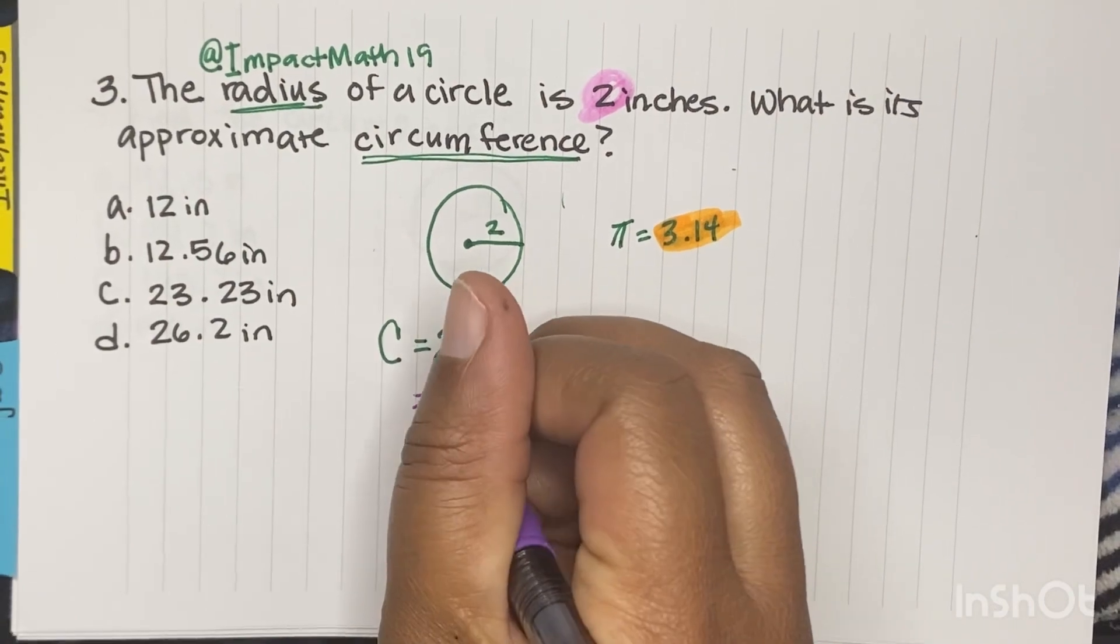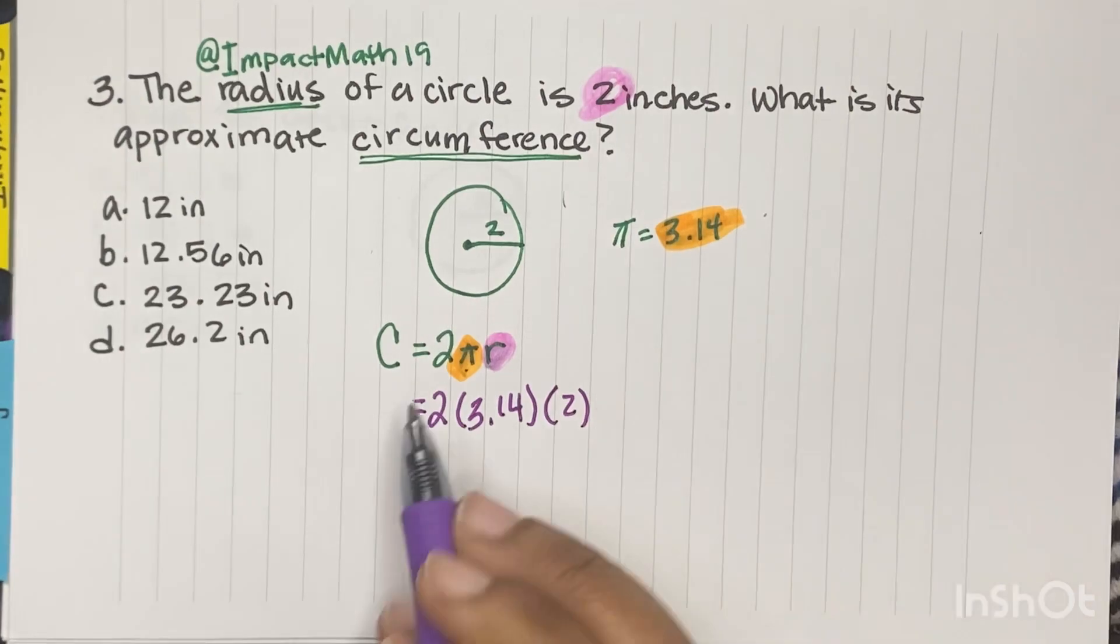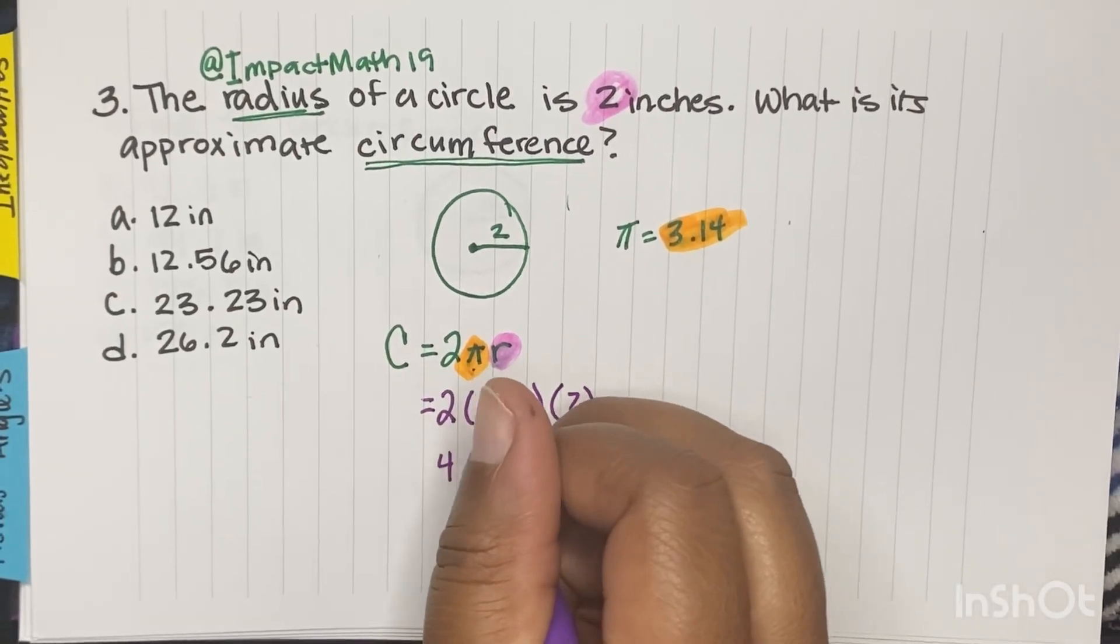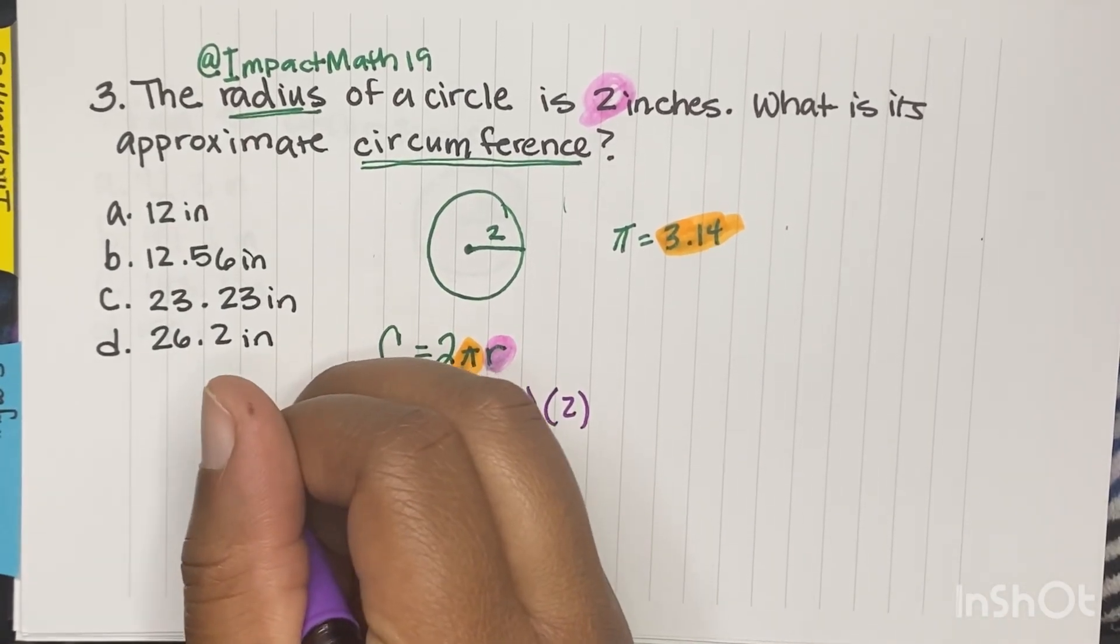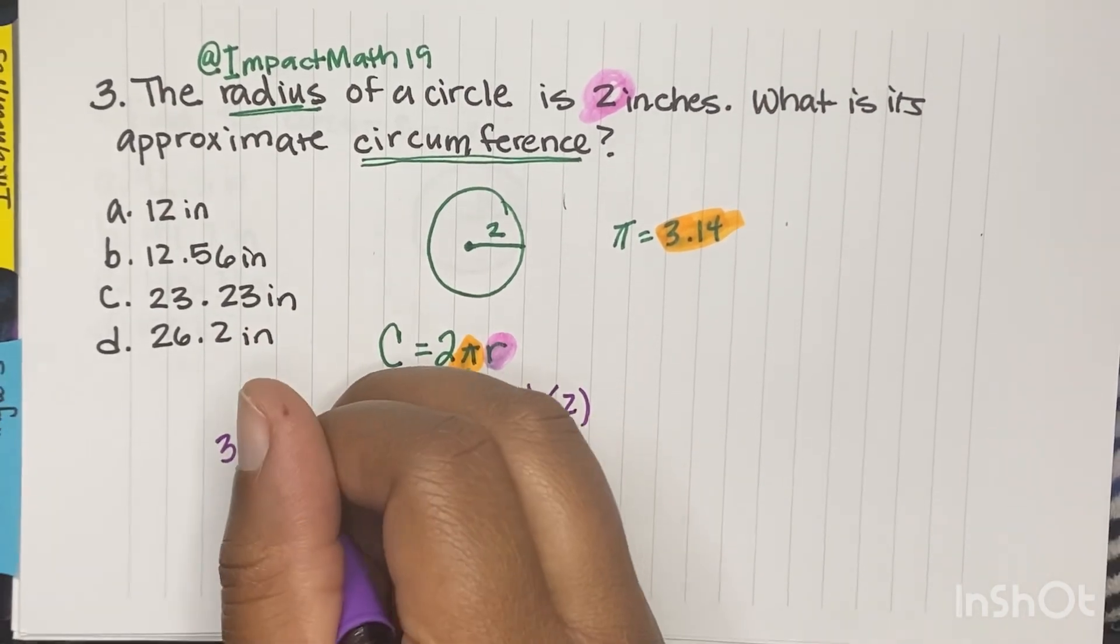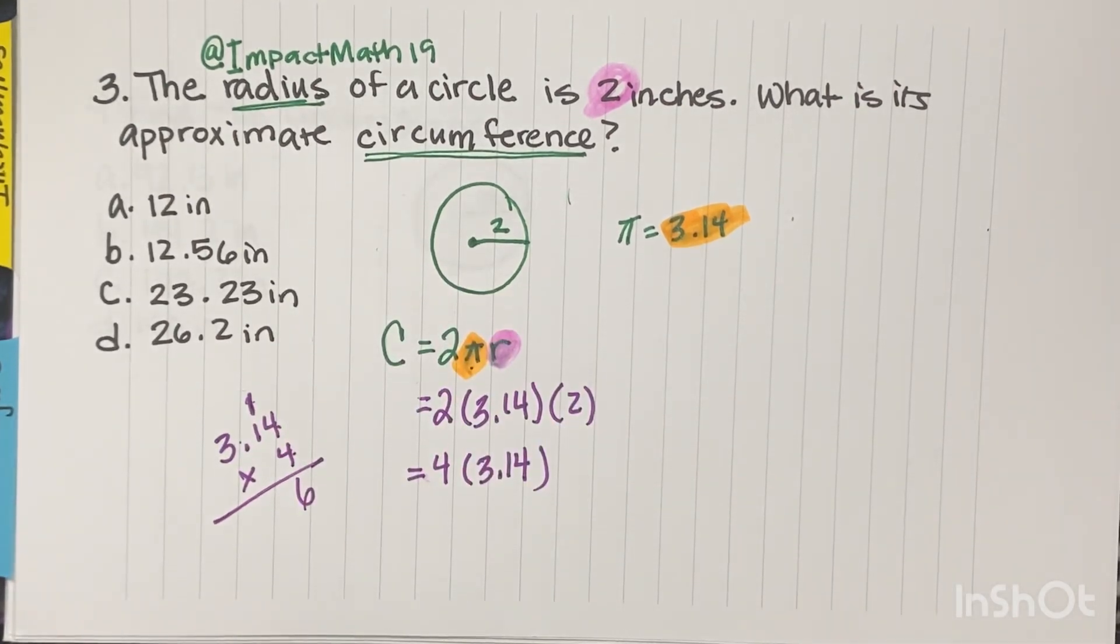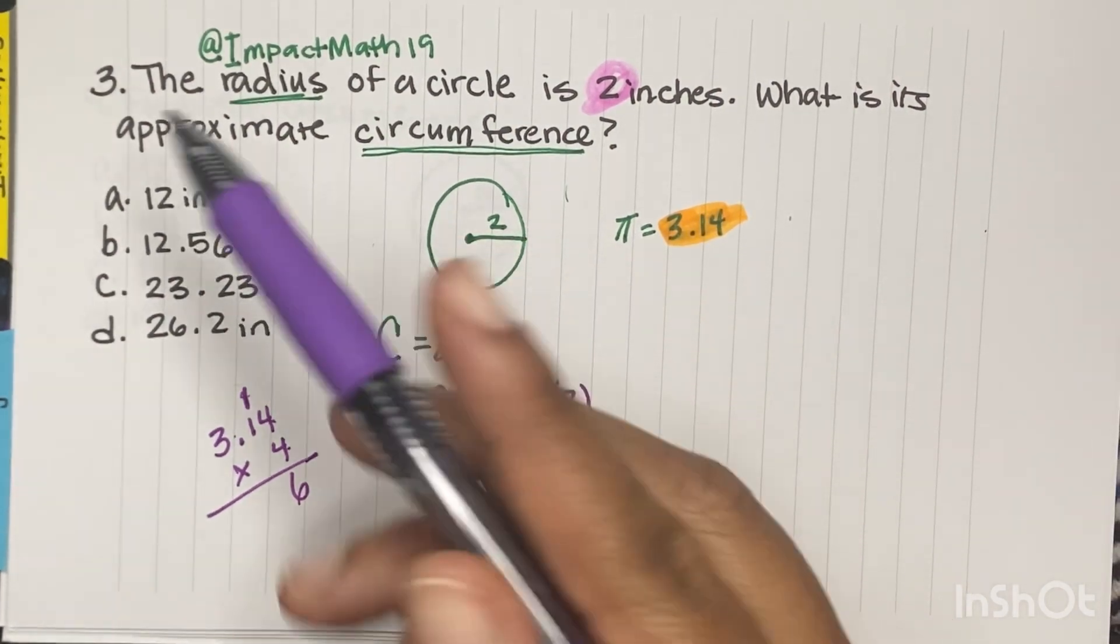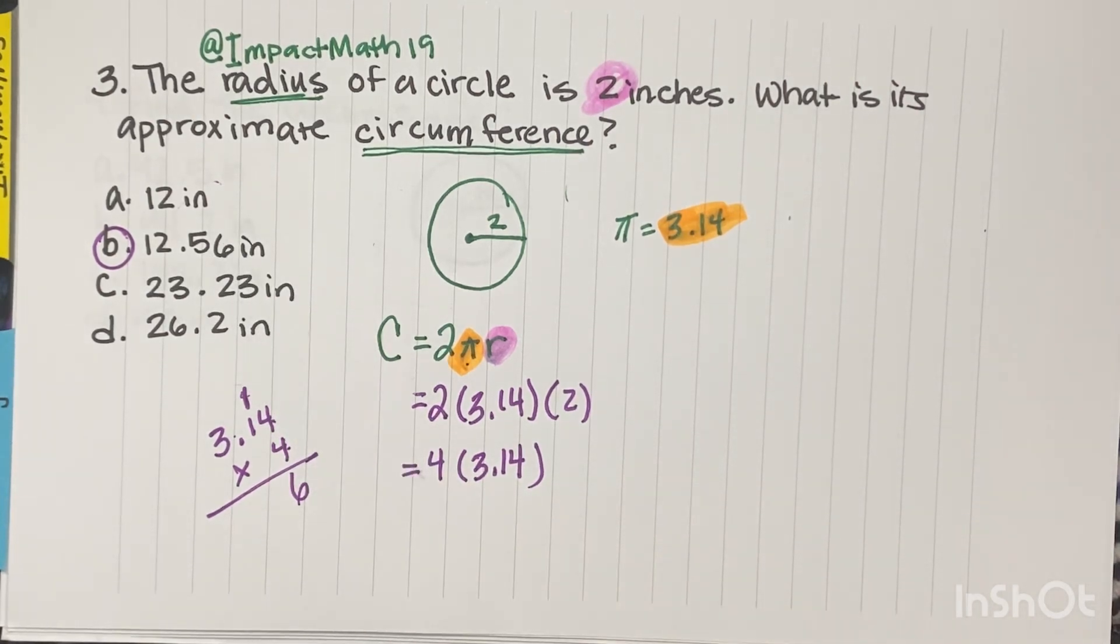And then we're going to multiply everything. So we're going to do 2 times 3.14 times 2. Well, 2 times 2 is 4, and we're going to times that by 3.14. So 3.14 times 4. So 4 times 4 is 16, carry the 1. Now this is a time test, so technically you could stop there because the only one that ends in a 6 is B, and you will circle and you will move on.